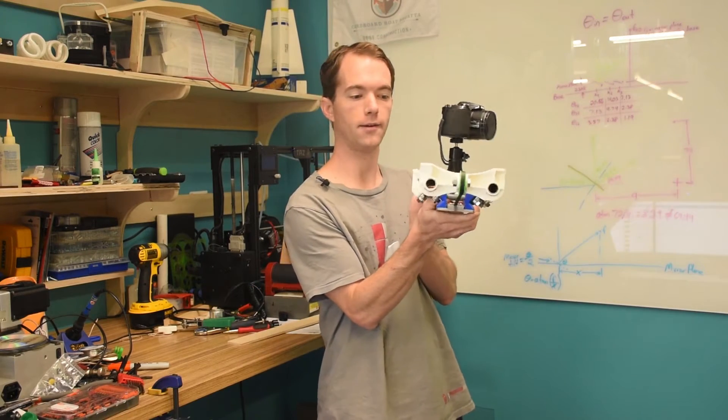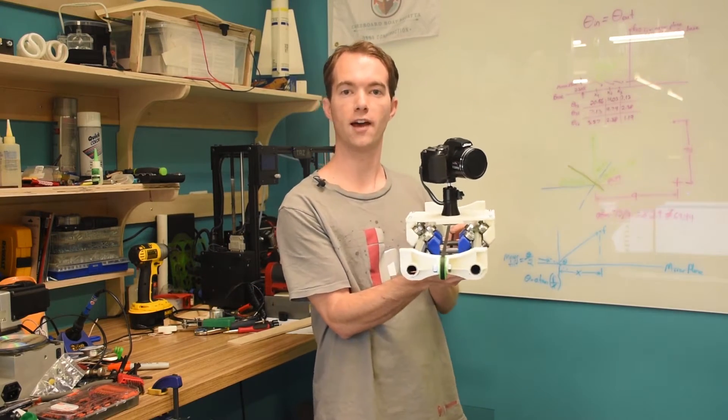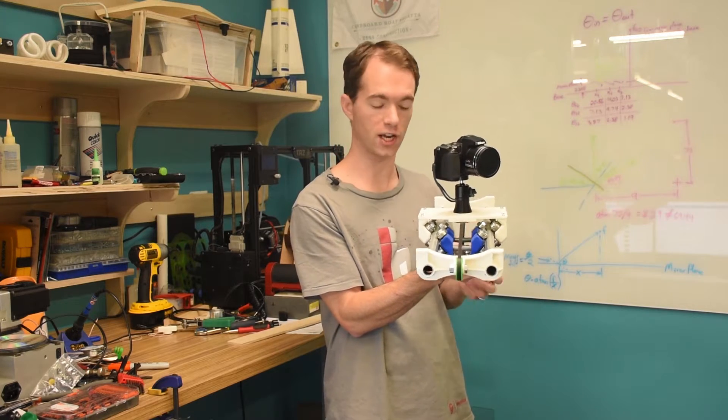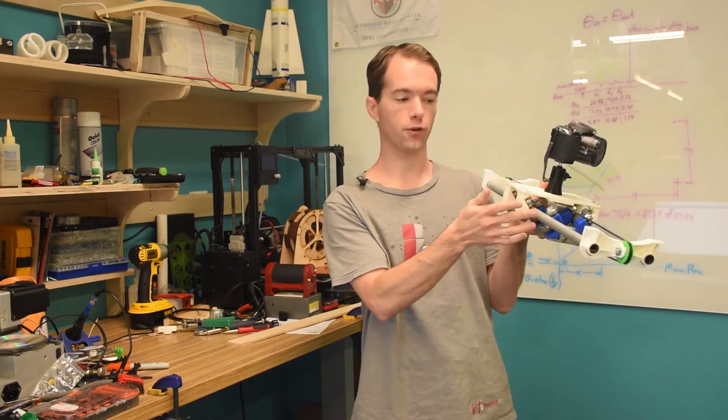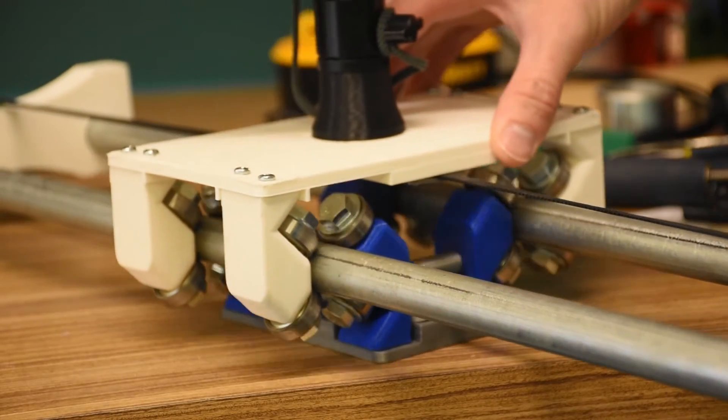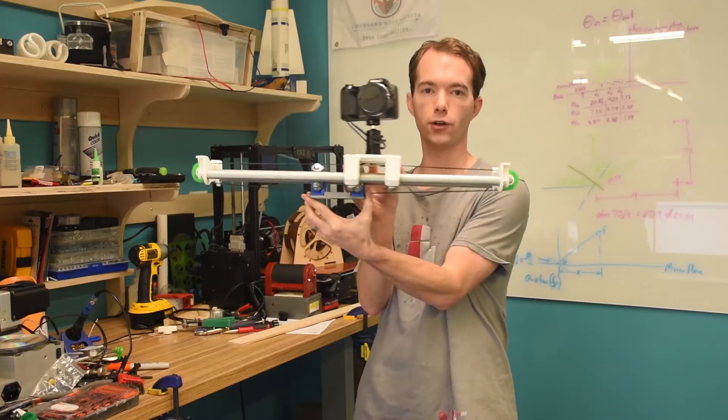So you can see I've got two rails that are just half-inch EMT conduit on four-inch centers. Then I've got bearings at 45 or 90-degree angles to each other, such that these can pass over center of each other.